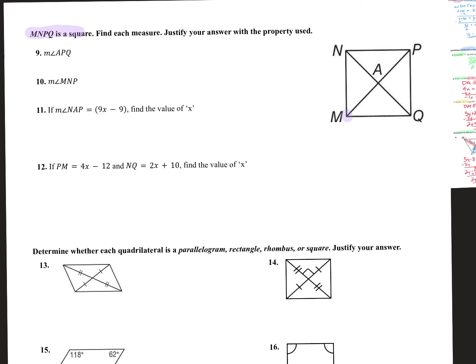Number 9, quadrilateral MNPQ is a square. We need to find the measure of angle APQ. In a square, we have four 90-degree angles. The diagonals in a square bisect those angles. So if I bisect 90 degrees, I split it into half, and half of 90 is 45 degrees. That is the measure of angle APQ.